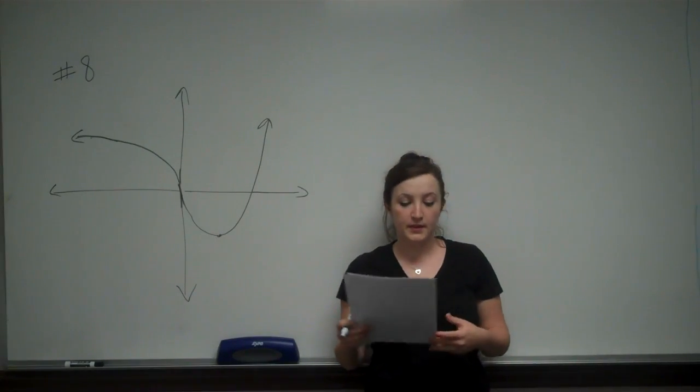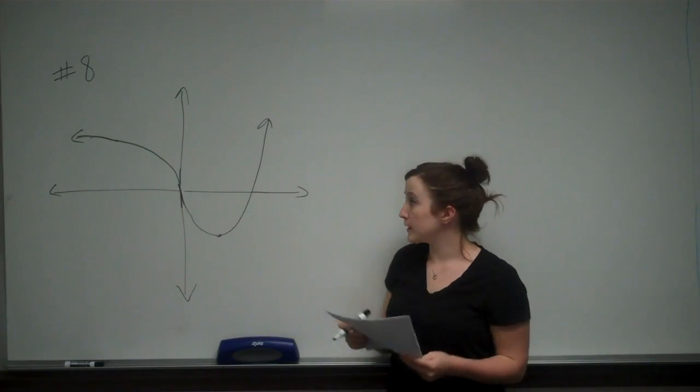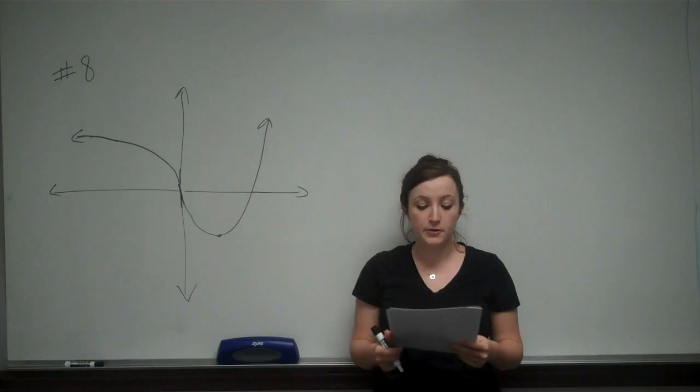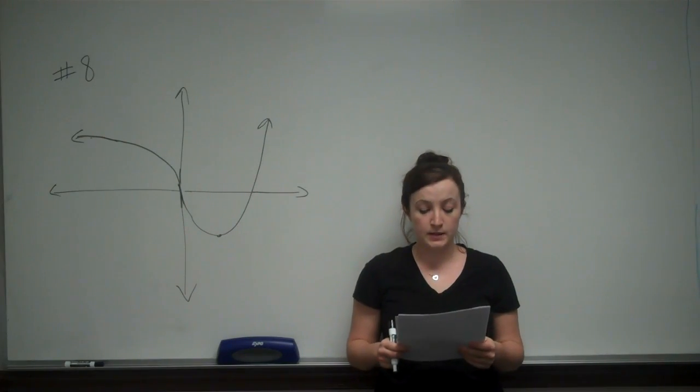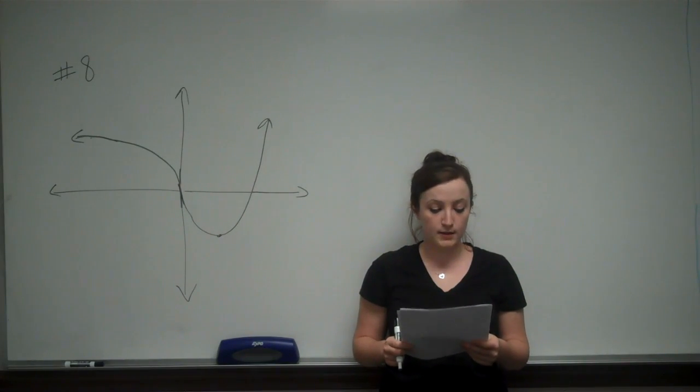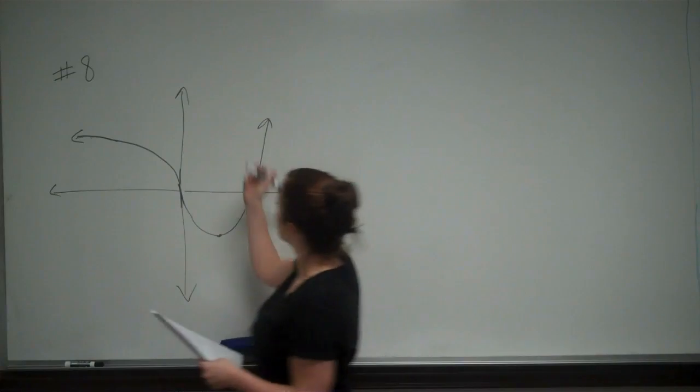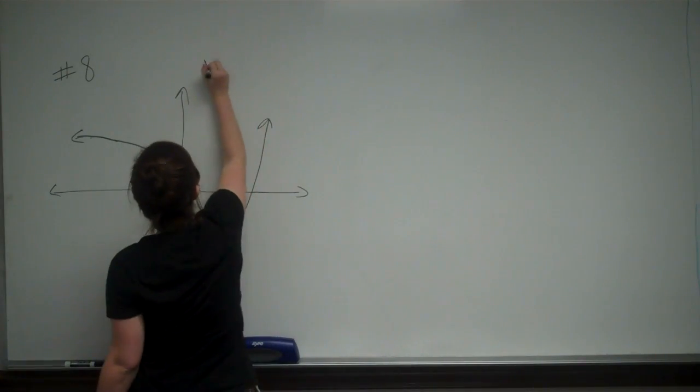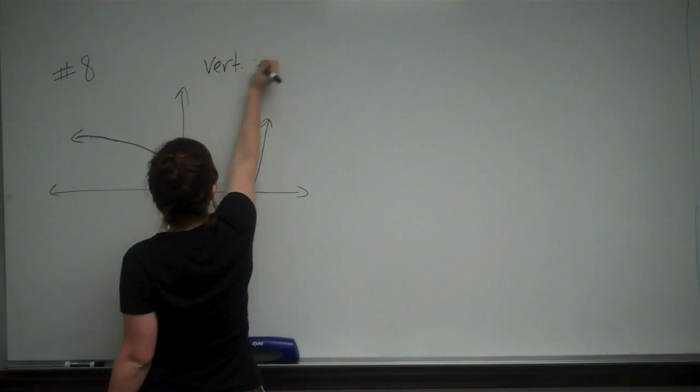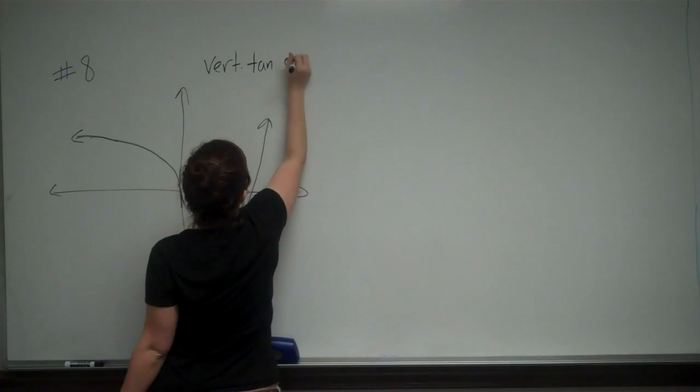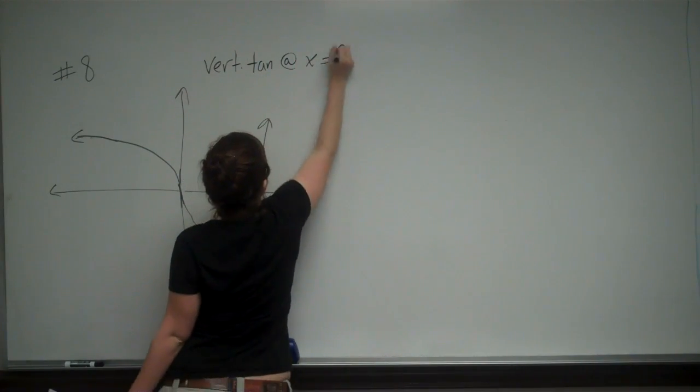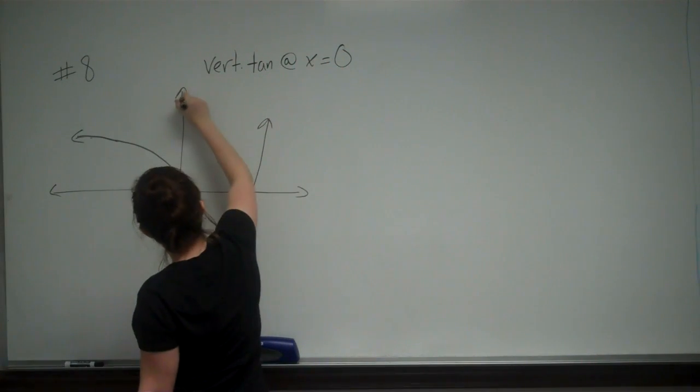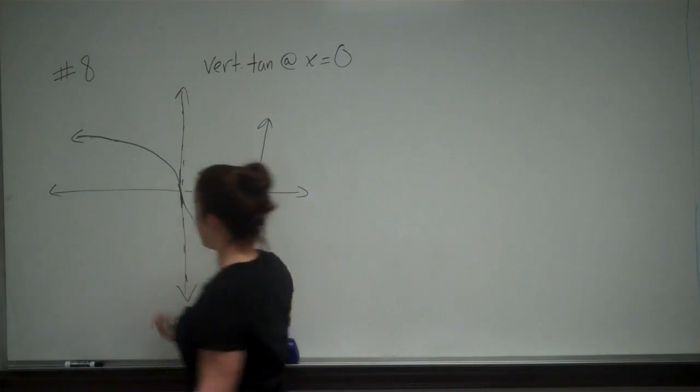This is problem number 8. So in this problem, we're given this graph and it says consider the graph y equals f of x, where f of x has a vertical tangent line at x equals 0. So I'm just going to write vertical tangent at x equals 0. So that line there.